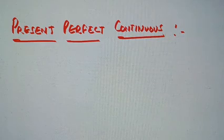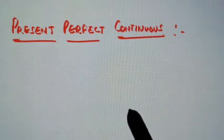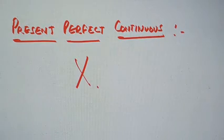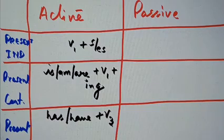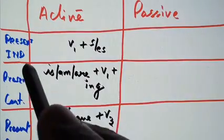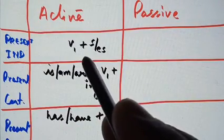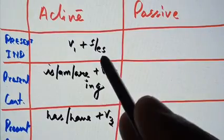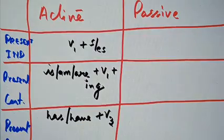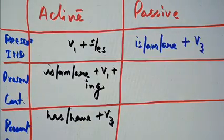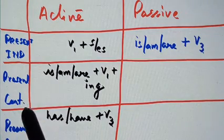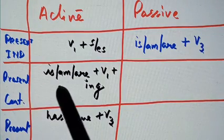Present perfect continuous cannot be changed into passive voice. In summary: for present indefinite, active voice uses first form plus 's/es', and passive voice uses is/am/are plus third form. For present continuous, active uses is/am/are plus first form plus 'ing', and passive becomes is/am/are plus being plus third form. For present perfect, active uses has/have plus third form, and passive becomes has/have plus been plus third form of the verb.